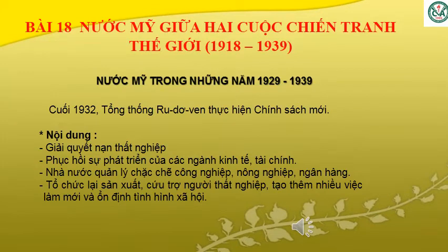Bài 18: Nước Mỹ giữa hai cuộc chiến tranh thế giới 1918-1939. Trong bài này, các em sẽ học phần nước Mỹ trong những năm 1929-1939, gồm những nội dung sau. Cuối năm 1932, Tổng thống Roosevelt thực hiện chính sách mới. Chính sách mới có những nội dung chính: thứ nhất, giải quyết nạn thất nghiệp, phục hồi sự phát triển của các ngành kinh tế tài chính; nhà nước quản lý chặt chẽ công nghiệp, nông nghiệp, ngân hàng; tổ chức lại sản xuất, cứu trợ người thất nghiệp, tạo thêm nhiều việc làm mới và ổn định tình hình xã hội.